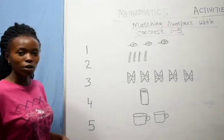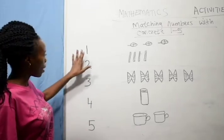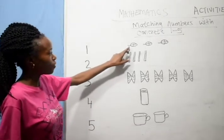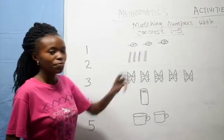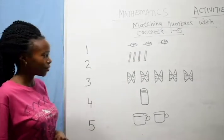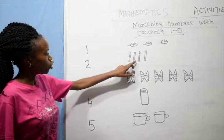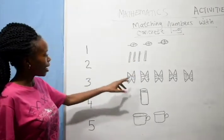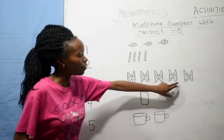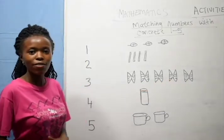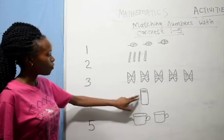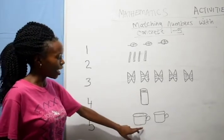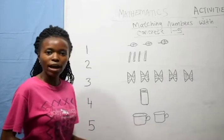We are going to match numbers from 1 to 5 using concrete. Here I have 1, 2, 3 — I have 3 leaves. Here I have 1, 2, 3, 4 — I have 4 sticks. Here I have 1, 2, 3, 4, 5 — I have 5 books. Here I have 1 packet of milk. And here I have 1, 2 — I have 2 cups.